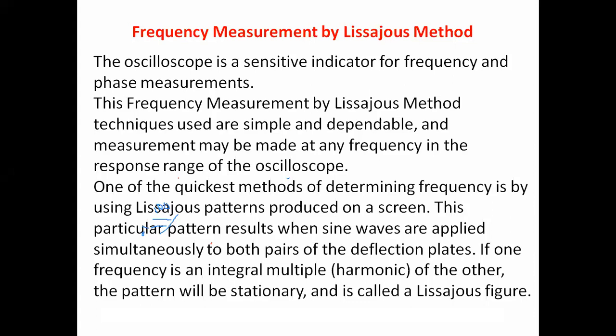To measure the frequency of an unknown signal, we compare it with a known signal frequency. For the horizontal deflection system, we apply the known frequency signal, and for the vertical deflection system, we apply the unknown frequency signal. In this case, we do not use any sweep generator. The input signal does not connect to the trigger section of the horizontal deflection system through the vertical amplifier.